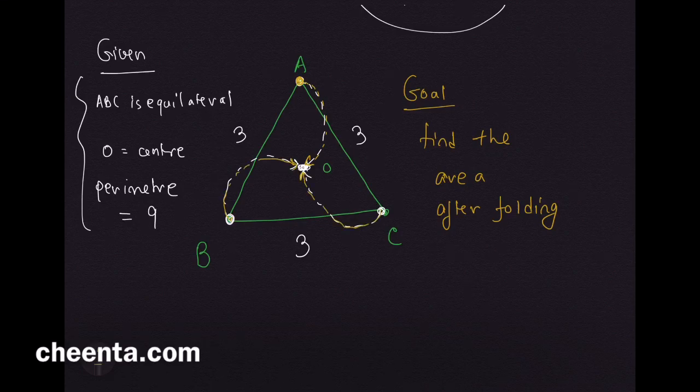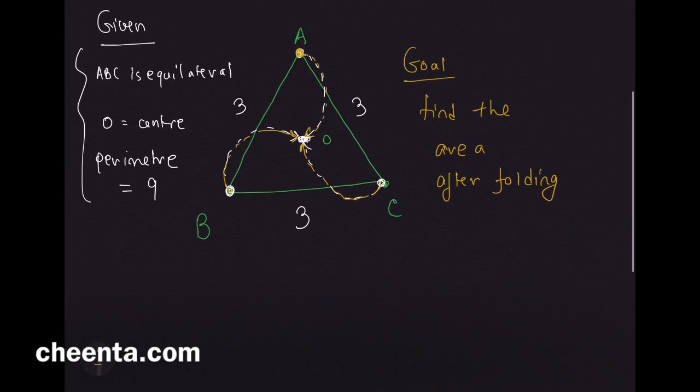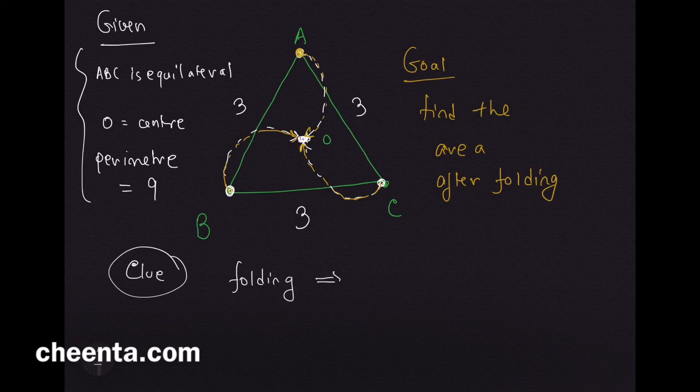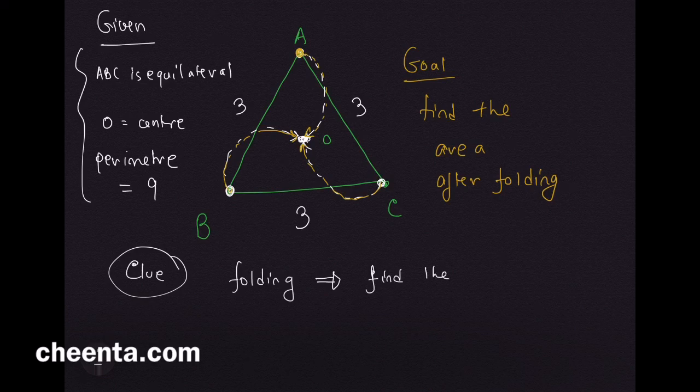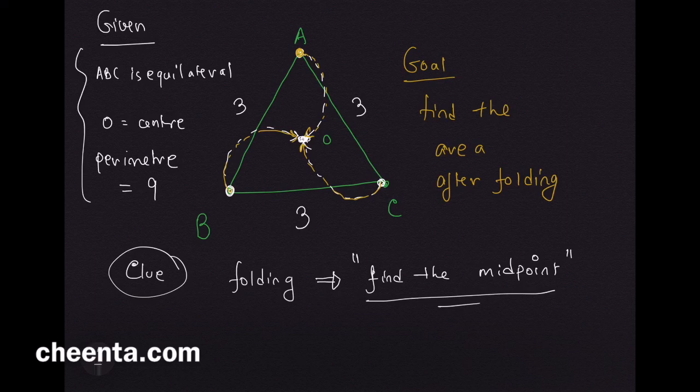Assuming that you have tried this problem on your own, I'll give you a clue. When you are folding, this usually means find the midpoint. It's a crude way of saying it, but usually folding means it's getting reflected in some sense.